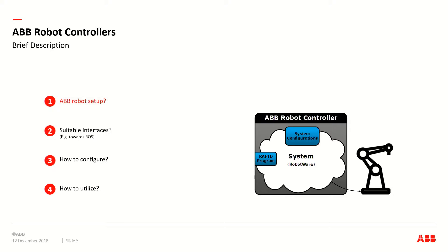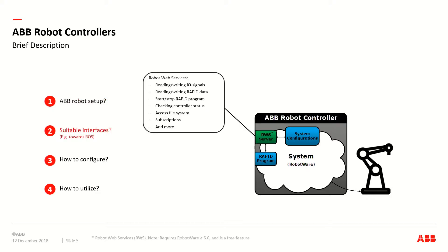RAPID is the ABB native robot programming language. For interfaces, there are two that I usually use. The first is called Robot Web Services, which provides general interaction with the robot via a REST API. You can check the controller status, start and stop programs, and trigger IO signals. It's a free feature available on all robots with RobotWare 6 or newer.